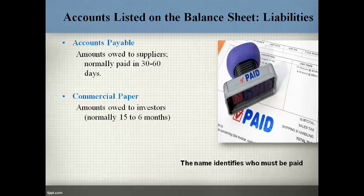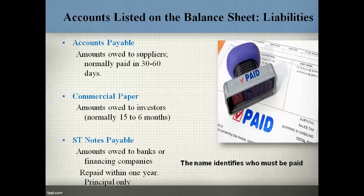Commercial paper represents amounts owed to investors that must be repaid within 15 days to 6 months. Companies that borrow using commercial paper generally repay these amounts by borrowing from other investors. Only the largest companies are creditworthy enough to borrow short-term from investors. Notes payable are amounts typically owed to banks and finance companies. Short-term notes payable are due to be paid within one year or less, and the amount of notes payable is principal only — interest is reported separately.